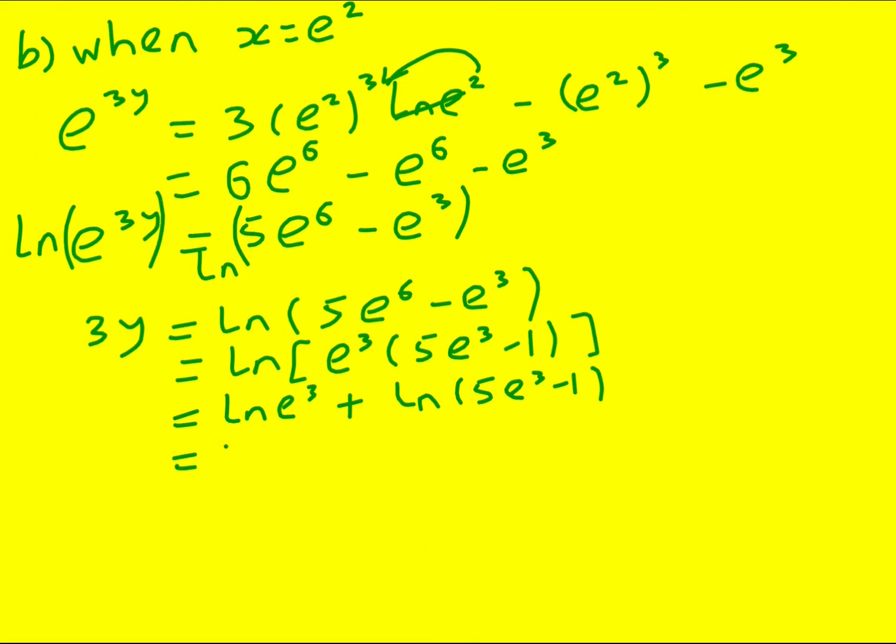And this becomes 3. Again I can either bring the 3 down or you can just say what do I raise to the power of to get e cubed, it's 3. So finally we just need to divide through by 3. y is going to equal 1 plus one third ln of 5 e cubed minus 1.